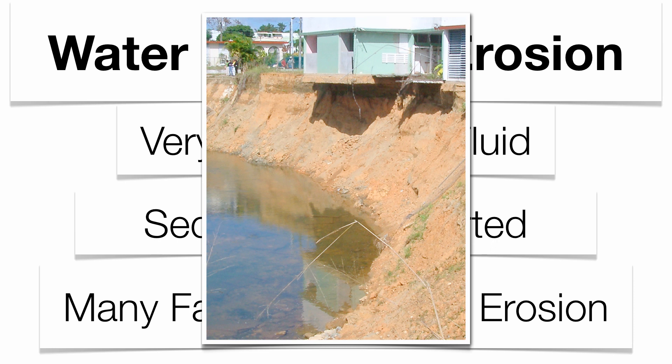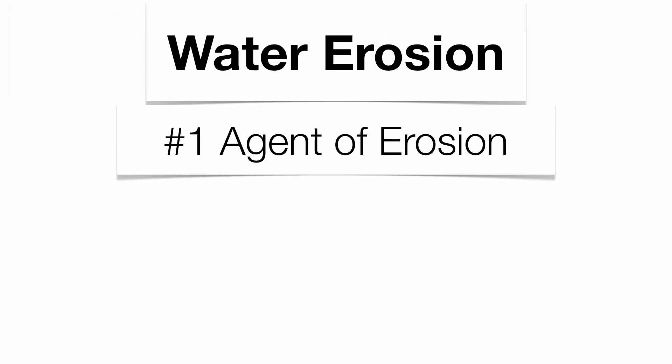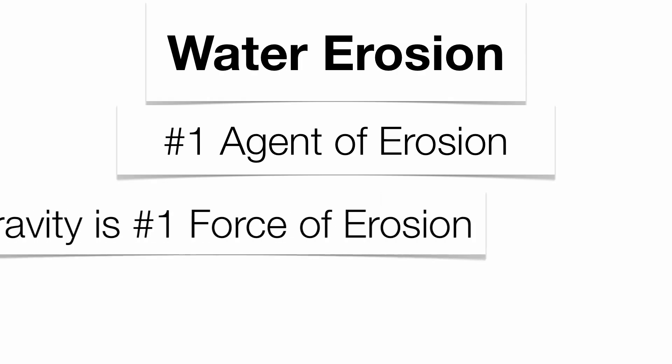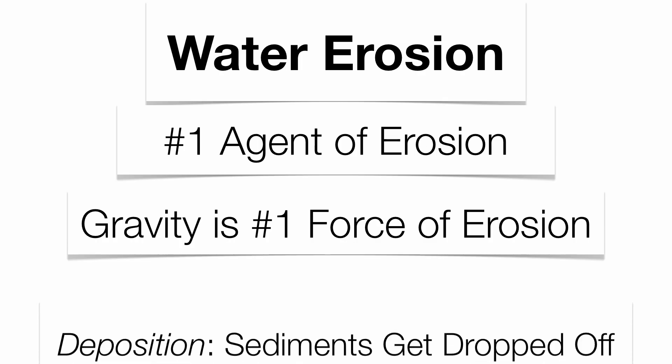We'll see the devastating nature of water erosion and also the devastating nature of wind erosion as well. Water erosion is the number one agent of erosion on the planet, very simply because the Earth is covered by about 75% water. Don't get that mixed up with the number one force on the planet, and that's going to be gravity. Gravity is going to be the number one force behind erosion.